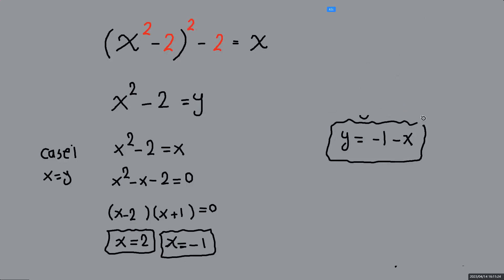So we're going to have the same one, the second one. This is going to be case 2. The same equation here. Instead of y, I'm going to go negative 1 minus x. So we're going to have x squared minus 2 equals negative 1 minus x. Both of them to the left hand side, we're going to have x squared plus x minus 1 equals 0.